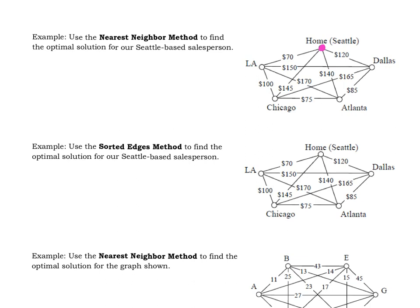So reading the algorithm for the nearest neighbor method, it says one, draw a complete weighted graph for the problem. Check. We've done that. Select a starting point. Check. We've already done that.